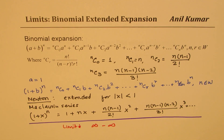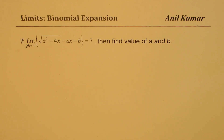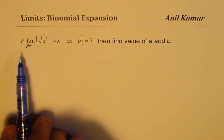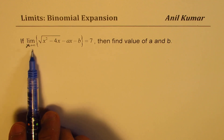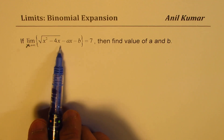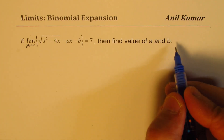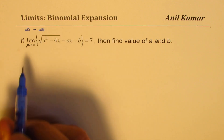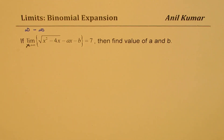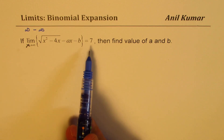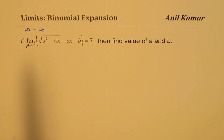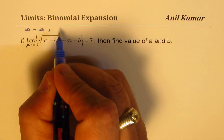With that, let's now solve our question. A brief introduction of the binomial series will really help us. The question is: if limit x approaches infinity of (sqrt(x^2 - 4x) minus ax minus b) equals 7, find the value of a and b. As you can see it is of the form infinity minus infinity — an indeterminate form which can have a limit. We are given a limit of 7 and need to find a and b. Our strategy is to use the binomial series.